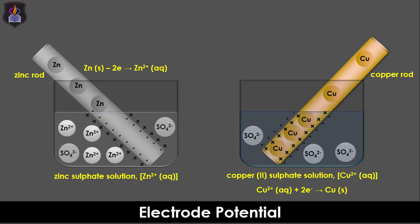The zinc electrode lost electrons to its electrolyte because the zinc atoms require less energy to lose electrons than is needed by the zinc ions to gain electrons, while the copper ions gain electrons from the electrode because less energy is required by the ions to gain electrons than for the copper atoms to lose electrons. The setup involving the metal electrodes and the solutions of the ions is called a metal-ions metal system or a half cell.